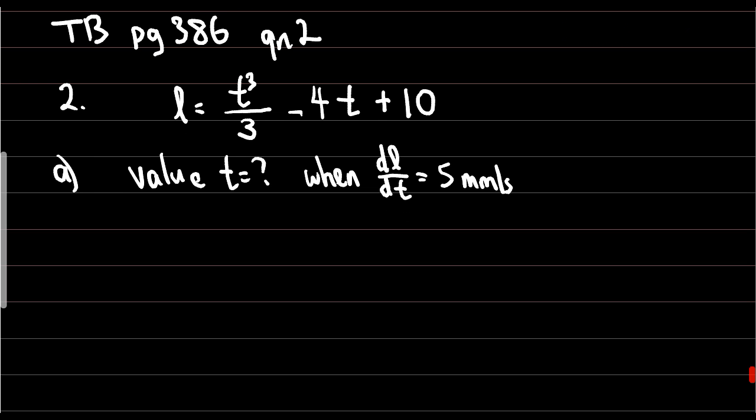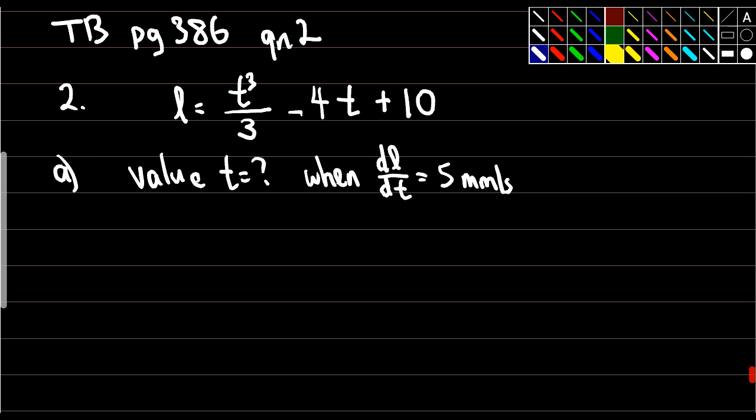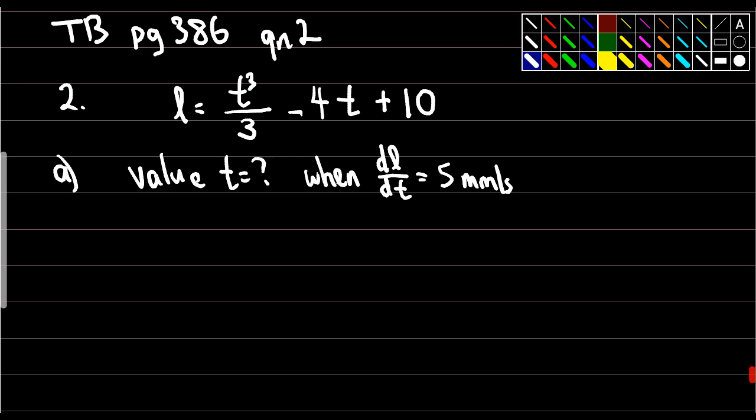So I want to find t equals to when dL/dt. But I'm given this. I am given this thing here. I'm given this thing here. So what must I do? What must I find? Before I can use this information, what must I find first? From this equation. Come again.